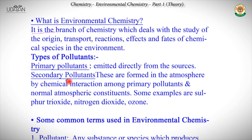Secondary pollutants are formed in the atmosphere by interaction of the primary pollutants with the normal atmospheric constituents. Examples of secondary pollutants are sulfur trioxide, nitrogen dioxide, ozone, etc.